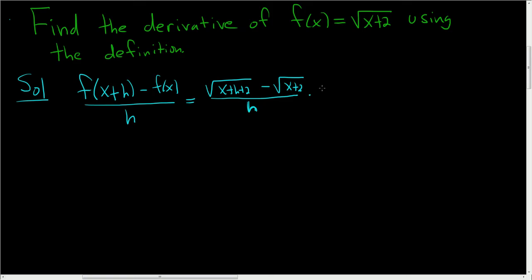So what we'll do is we will rationalize the numerator. We're going to multiply by the square root of x plus h plus 2 plus the square root of x plus 2 over the same thing, square root x plus h plus 2 plus the square root of x plus 2.